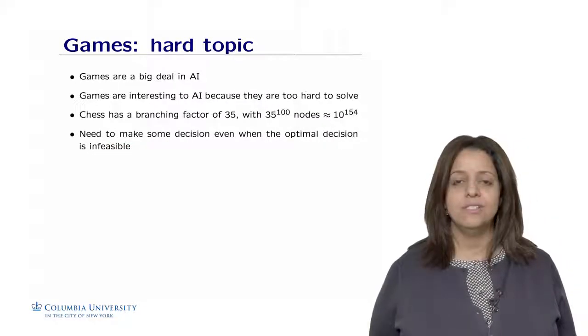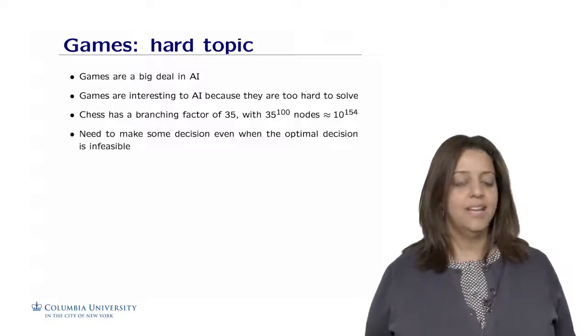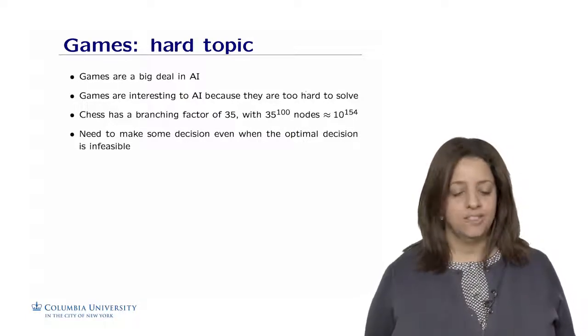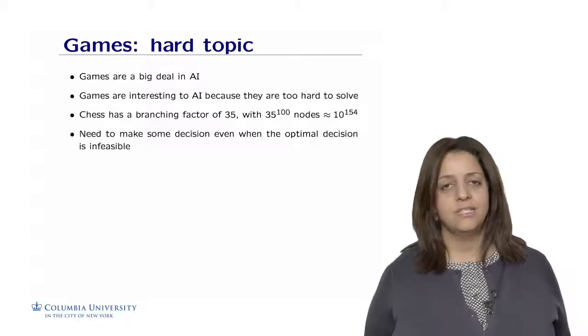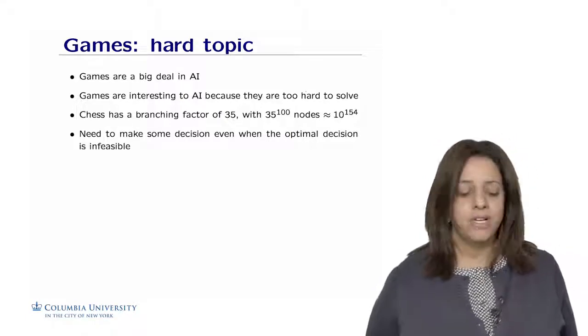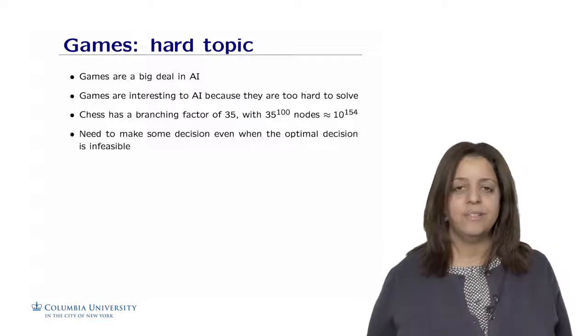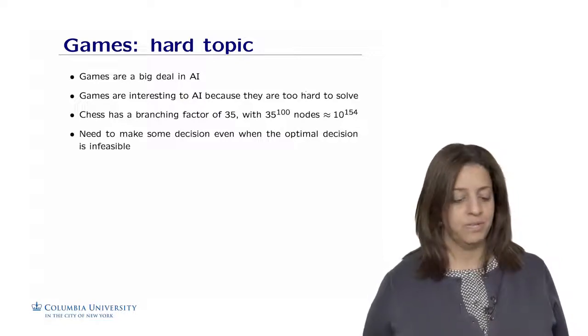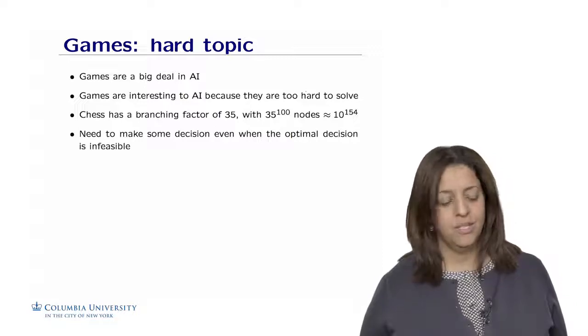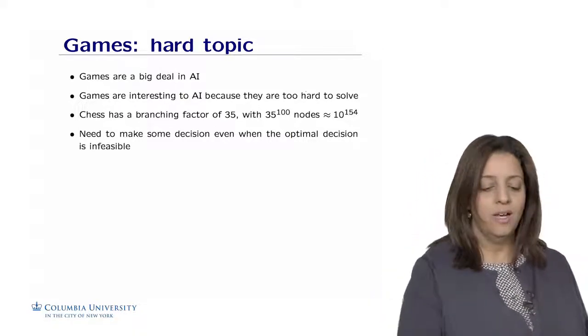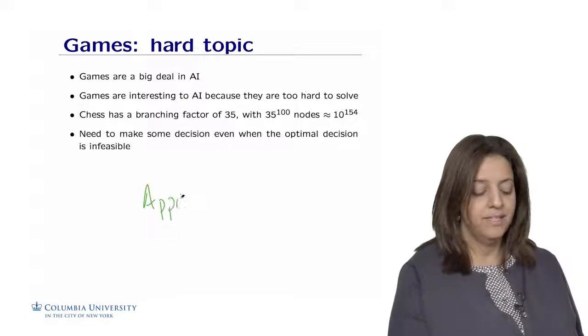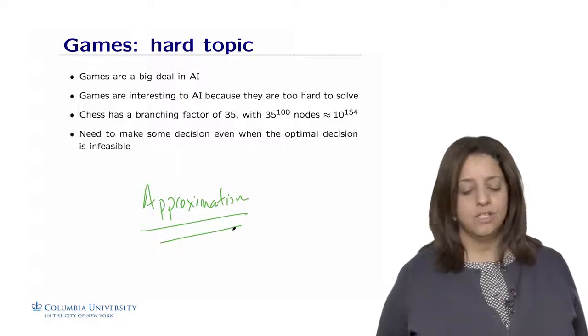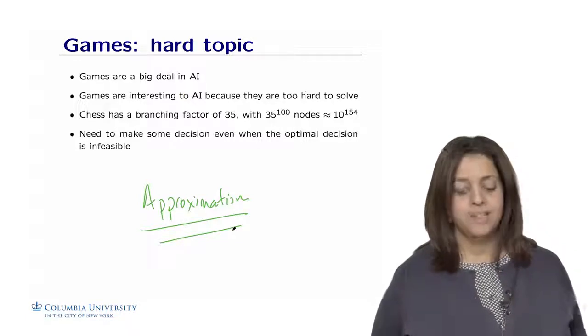Games are considered a hard and hot topic that pushes the boundaries of AI research. They're interesting because they're too hard to solve. For example, chess has a branching factor of 35, meaning the search space is 35 to the 100, approximately 10 to the 154 nodes. We need to make decisions even when the optimal solution is unfeasible. Approximation is a key ingredient to solve games in AI.